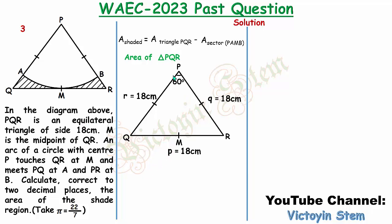The angle at each vertex is going to be 60 degrees — the angle at Q is 60 degrees, the angle at R is 60 degrees. How did I know? Because it's an equilateral triangle: the sum of interior angles of a triangle is 180, and 180 divided by 3 is 60. So each interior angle — at P, Q, and R — is 60 degrees.